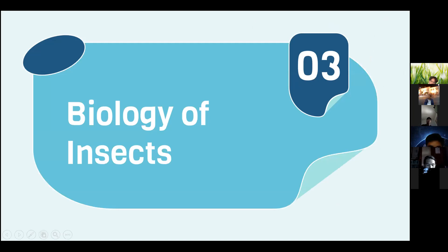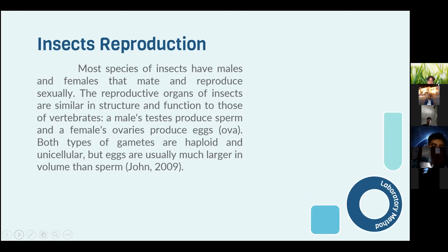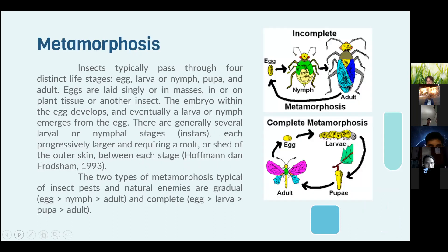The next material is the biology of insects. According to John (2009), most species of insects have males and females that mate and reproduce sexually. The reproductive organs of insects are similar in structure and function to those of vertebrates — a male testis produces sperm and a female ovary produces eggs. Both types of gametes are haploid and unicellular, but eggs are usually much larger in volume and denser than sperm.